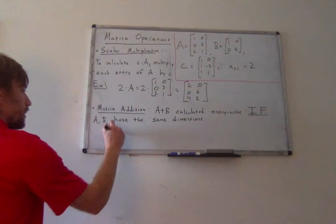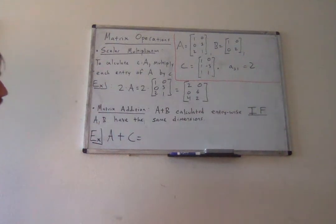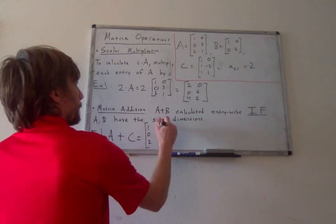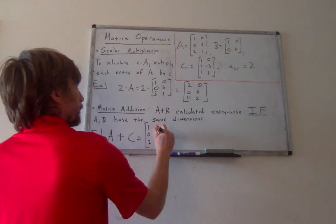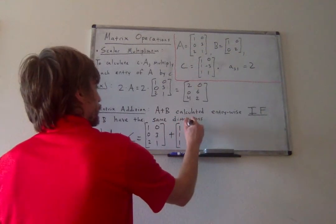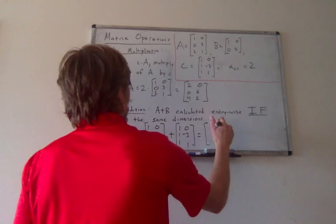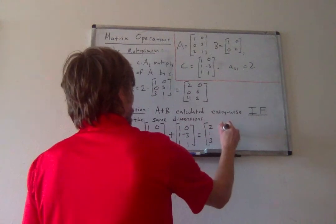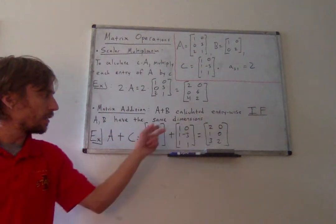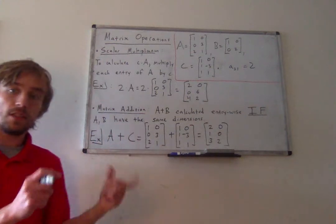So for example, here A plus C, we can calculate. And again, see all we do is we add the two 1s to get a 2, add the two 0s to get a 0. 0 plus 1 is 1. And we just continue that trend of adding each of the corresponding entries in the two matrices.